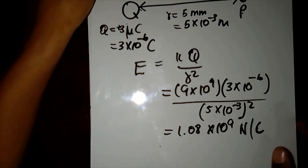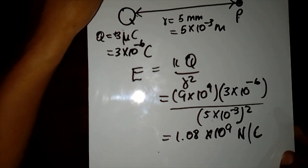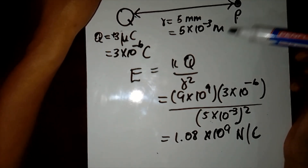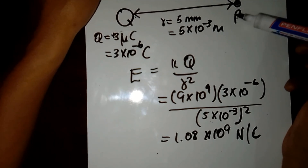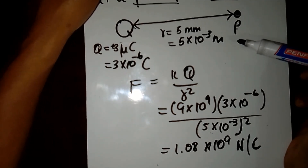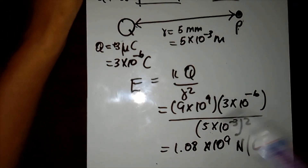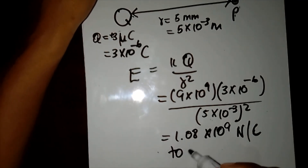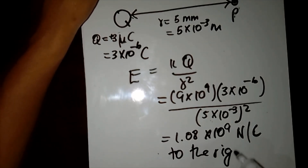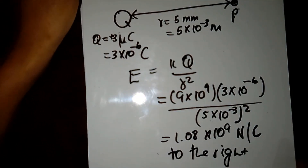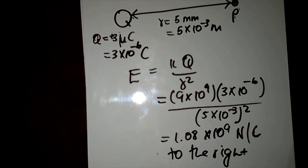The direction of E at that point would be the direction p would move if it were positive. Since q is positive, p would repel and move to the right, so the direction is to the right. This brings us to the end of this lesson. In the next lesson we'll be looking at a previous question paper — thank you for watching.